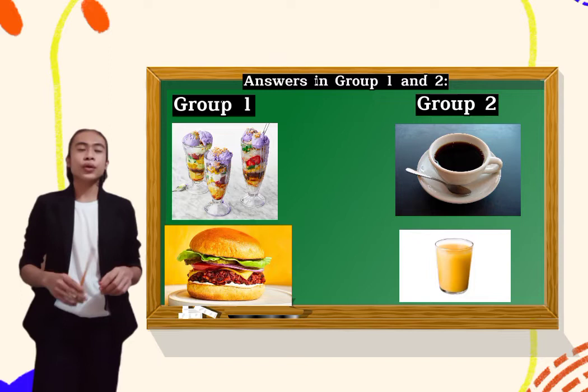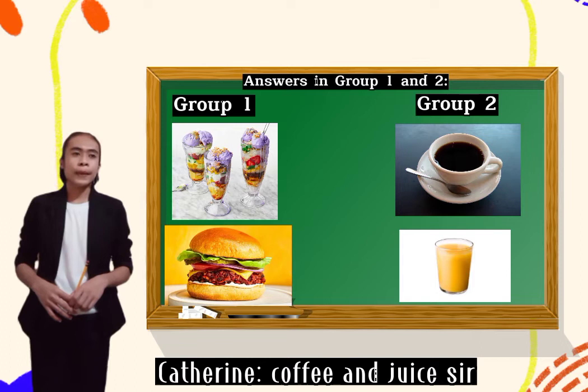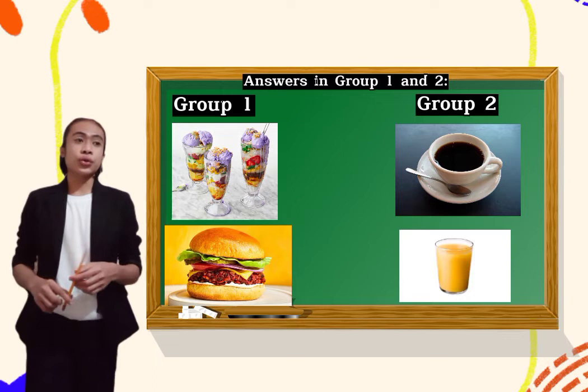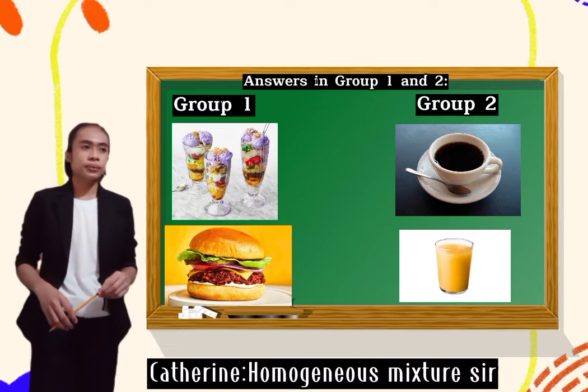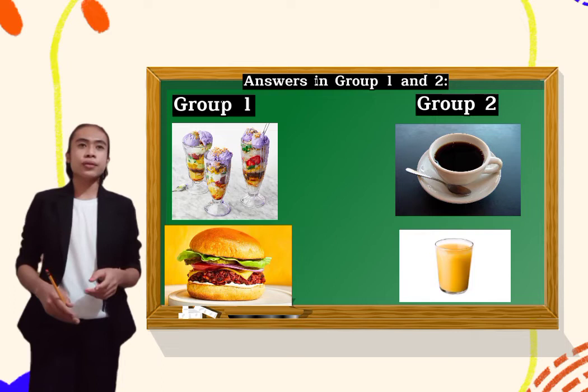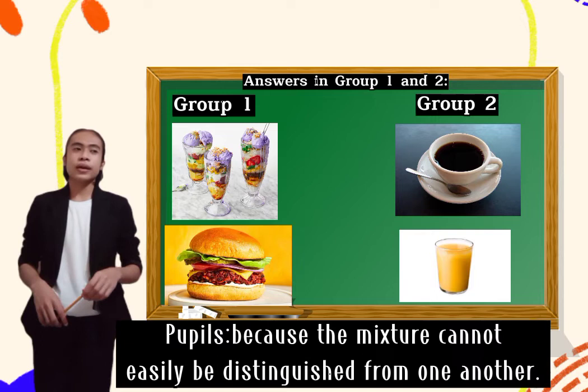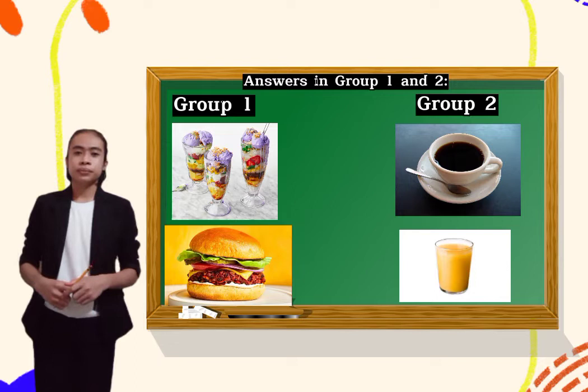Now, how about these second pictures in the group 2? Can you identify, Catherine? Okay, it is a coffee and egg juice. Now, what type of mixture juice and coffee is? Okay, it is a homogeneous. Class, why it is a homogeneous? Okay, Catherine, please take your seat. Okay, very good. Correct.